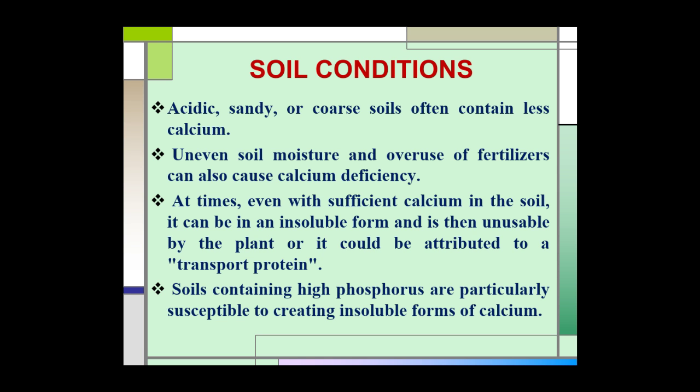The soil conditions that affect the availability of calcium to plants: acidic, sandy, or light soils often contain less calcium. Uneven soil moisture and overuse of fertilizer can also cause calcium deficiency. At times, even with sufficient calcium in the soil, it can be in an insoluble form and is therefore unusable by the plant, which could also be attributed to a transport protein issue. Soils containing high phosphorus are particularly susceptible to creating insoluble forms of calcium.